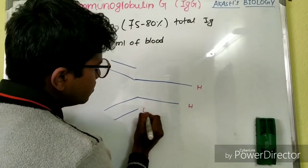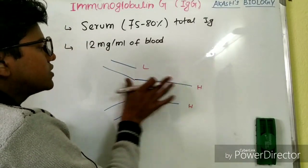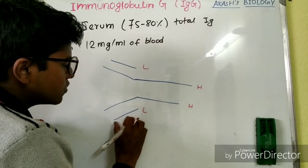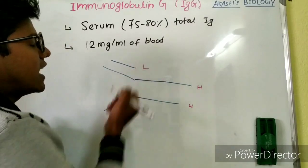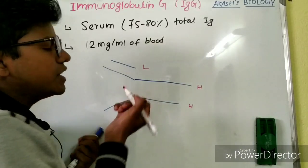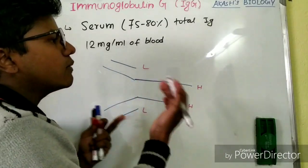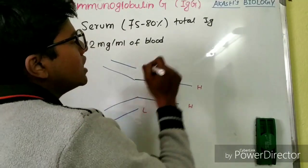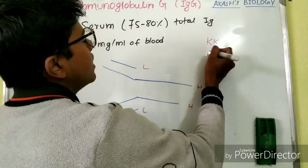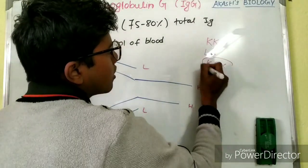IgG similarly has two heavy chains and two light chains. The heavy chain contains one constant region and one variable region, and the light chain also has one constant region and one variable region. The light chains may be of kappa type or lambda type, as stated earlier, but they are never found in combinations — any immunoglobulin can have kappa-kappa or lambda-lambda, but never kappa-lambda combinations.